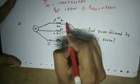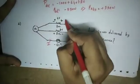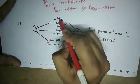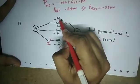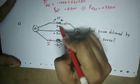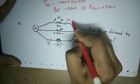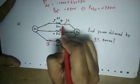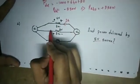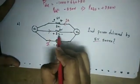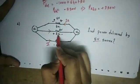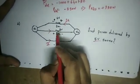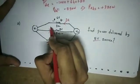Current direction is from positive to negative. Current I equals V over R, so 6 divided by 3 equals 2 amps. For the next resistor, I equals V over R, so 2 divided by 2 equals 1 amp.